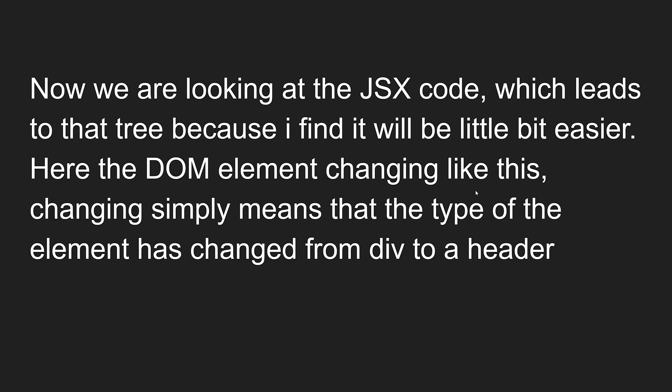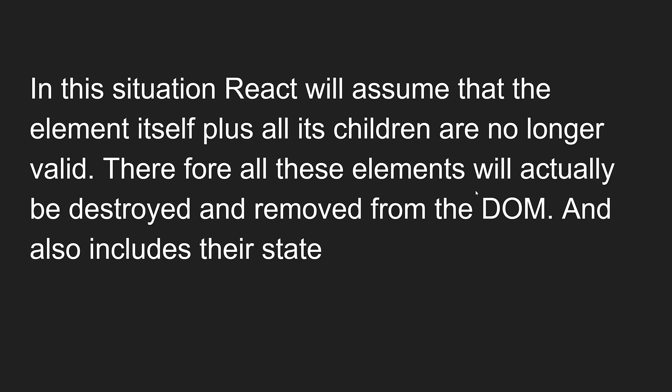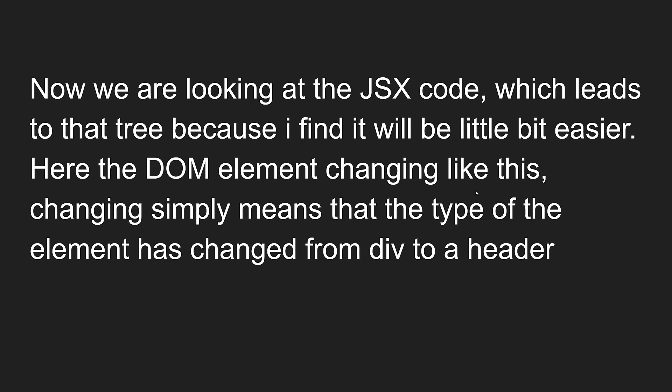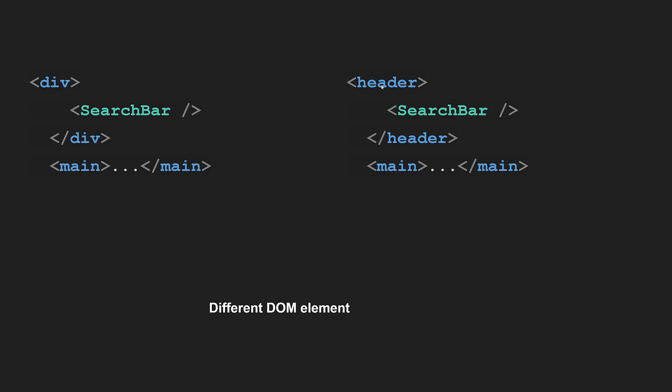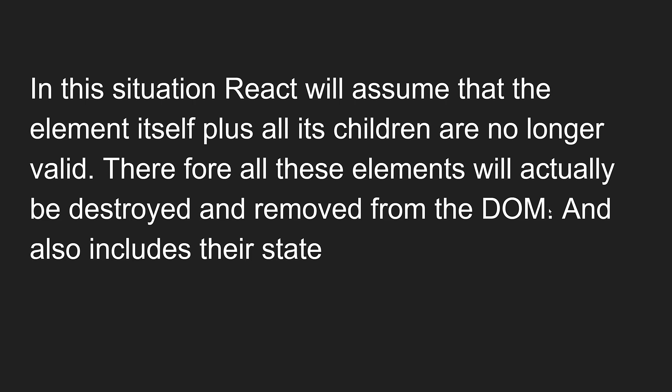Let's see how the diffing algorithm works in this case. Changing the DOM element like this simply means the type of the element has changed from div to header. In this situation, React will assume that the element itself plus all its children are no longer valid. Therefore, all these elements will actually be destroyed and removed from the DOM, including their state.